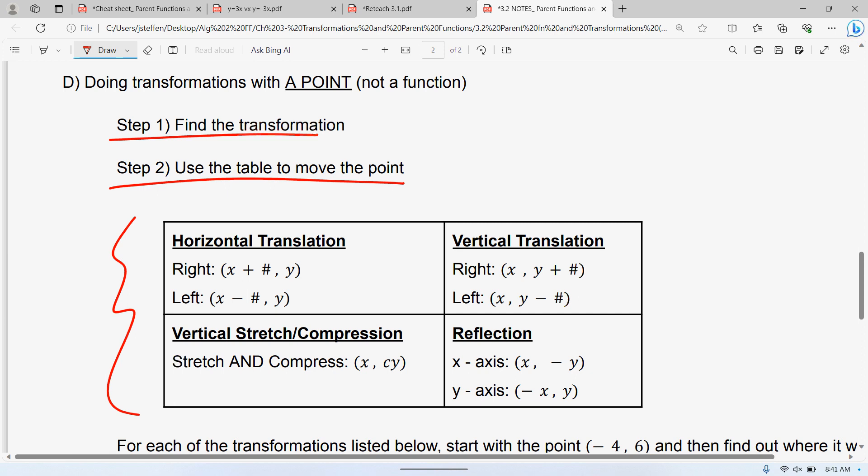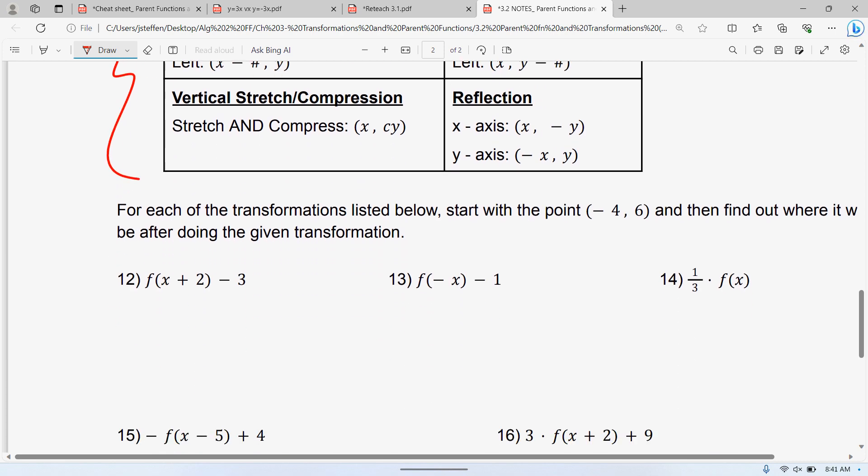A cheat sheet for your test. Remember, the cheat sheet I printed off here, there's that dotted line that said you're going to get the top half on the test but not the bottom half. It's because the bottom half, I took that off so I could put this table on there. So this one says, for each listed below, we're going to move the point negative 4, 6. So number 12, we have f of x plus 2 and minus 3. Don't worry about your ordered pair. Don't worry about that table. What is the transformation from 3.1?